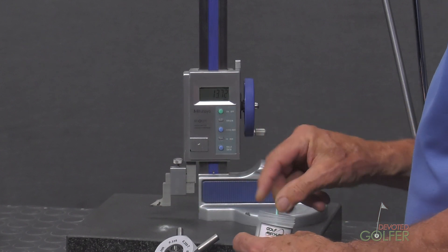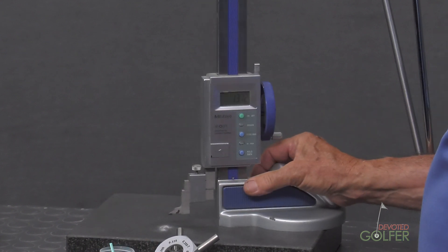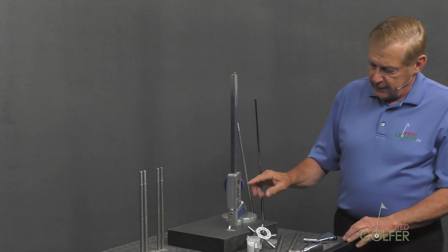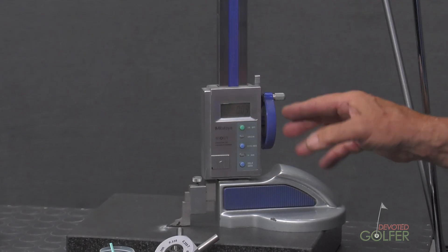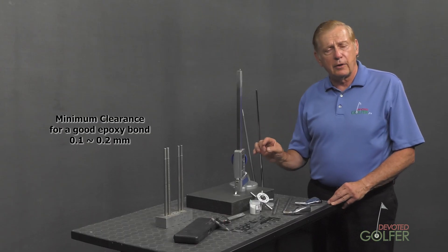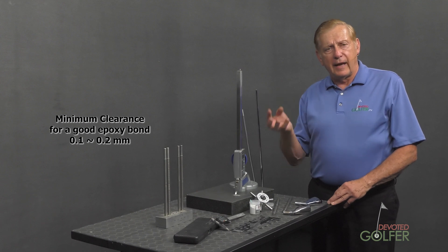And when I drop the gauge onto those beads, you will see that I'm at 0.1 millimeters or 0.1 millimeter, which is the target that we were looking for in our epoxy gap.